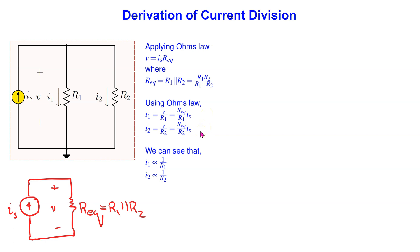This shows that I1 is inversely proportional to R1 and I2 is inversely proportional to R2. This completes the derivation of the current division principle.